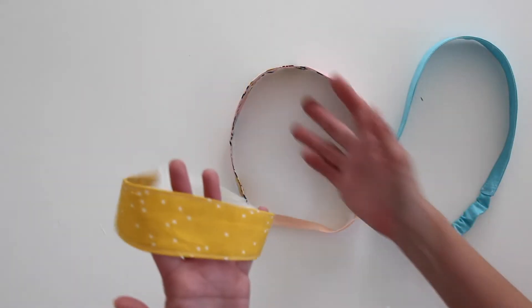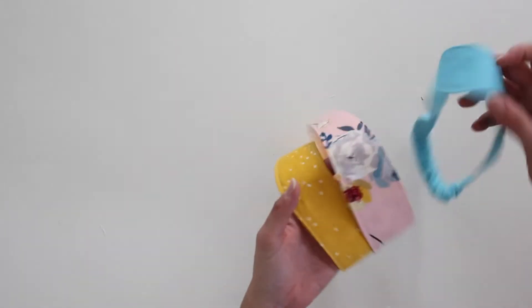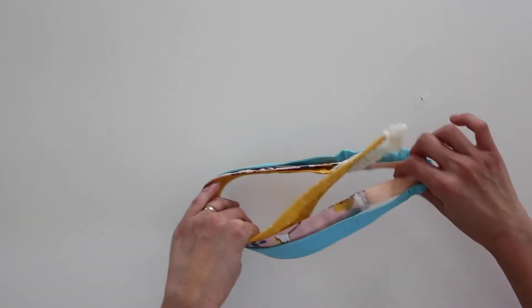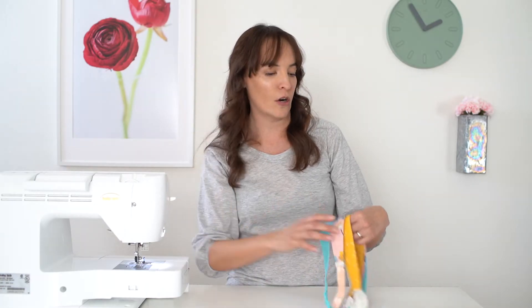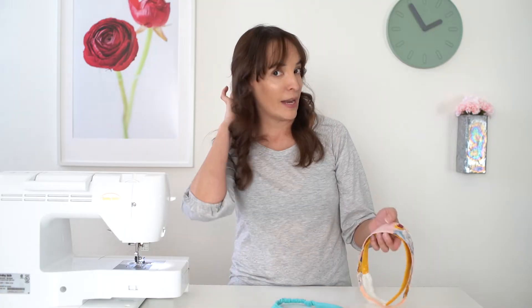So today we're making headbands, and these are made out of woven fabric with stretch elastic at the base that goes under your head in the back.